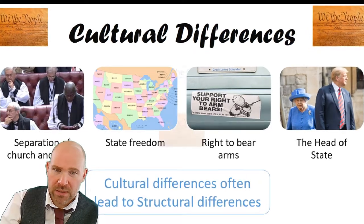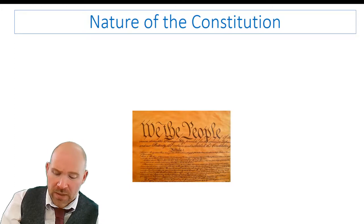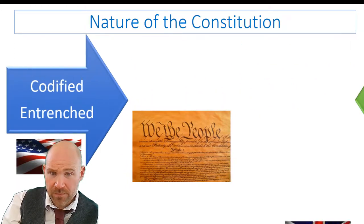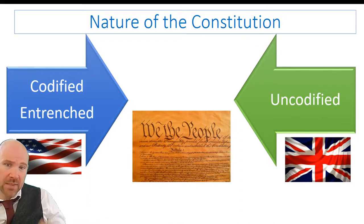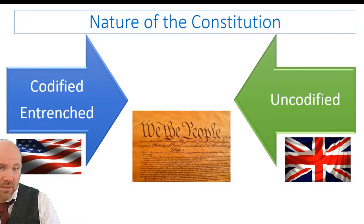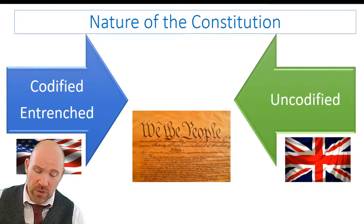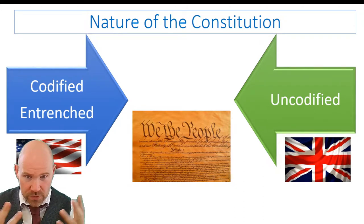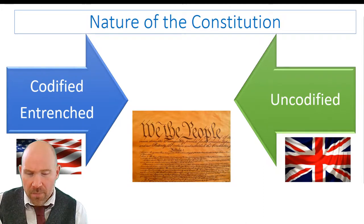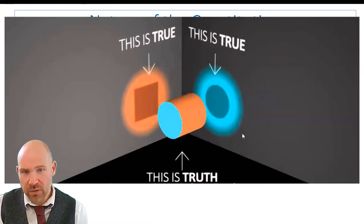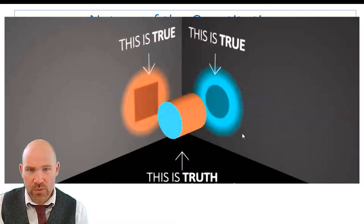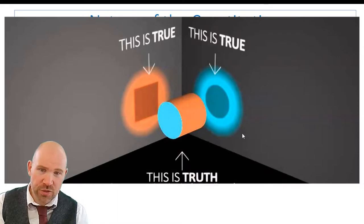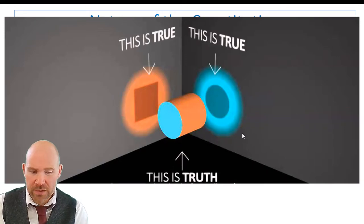Here's a slide you've probably seen before at a very basic level: the USA is codified and entrenched, and the UK is uncodified. You should know what those words mean and be able to write a couple of paragraphs using definitions and examples. But I want to take a moment and show this image — the difference between truth and truth. There's a shape that when lit from one side shows a square, and from another shows a circle. But the truth is it can actually be both a square and a circle depending on where the light is.